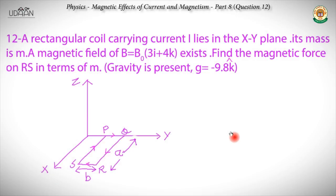Question 12: A rectangular coil carrying current I lies in the XY plane, its mass is m. A magnetic field B = B₀(3î + 4k̂) exists. Find the magnetic force on RS in terms of m, where gravity is present with value g = −9.8k̂. We have a rectangular coil with a current, a given magnetic field, and we need to find the magnetic force on element RS in terms of the mass of the coil.